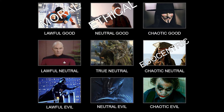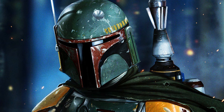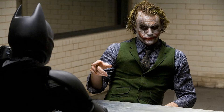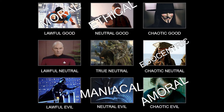Number four: maniacal. This individual would naturally be evil. However, their tendencies can range from lawful to chaotic — basically whatever will help them accomplish their goals, or they could even have their own set of rules that they follow. A good example of this is Boba Fett. He has his own code, which he follows, but will do whatever it takes to accomplish the mission. Number five: amoral. These individuals have no regard for life or laws. People are a means to an end, and they may not even care very much for their own life. The best example of this is Heath Ledger's Joker in The Dark Knight. These individuals are chaotic evil, pure and simple.